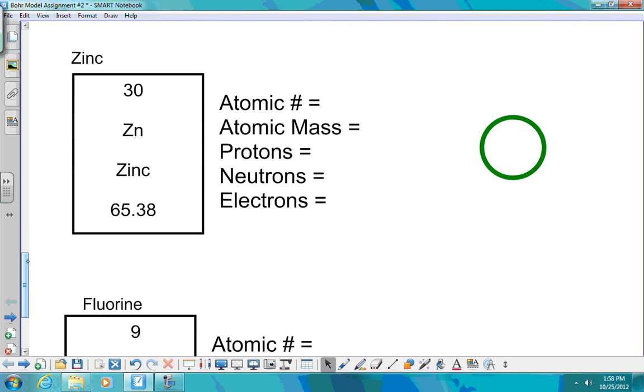The next one you needed to do was zinc. Zinc has an atomic number of 30. It has an atomic mass of 65. Protons is 30. My number of neutrons is 35. Remember, I get that from saying 65 minus 30. And my number of electrons is going to equal my number of protons in this case. So let's start with our nucleus again. We have 30 protons, 35 neutrons.